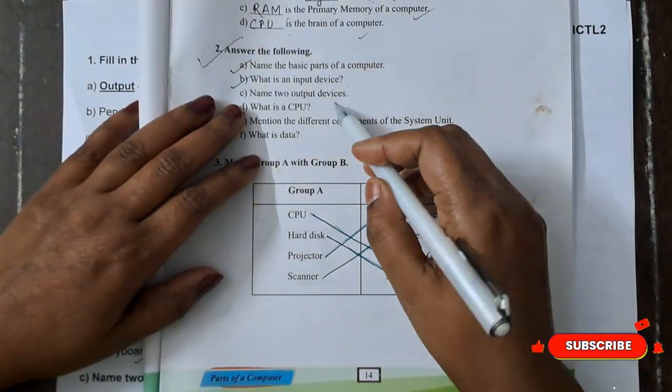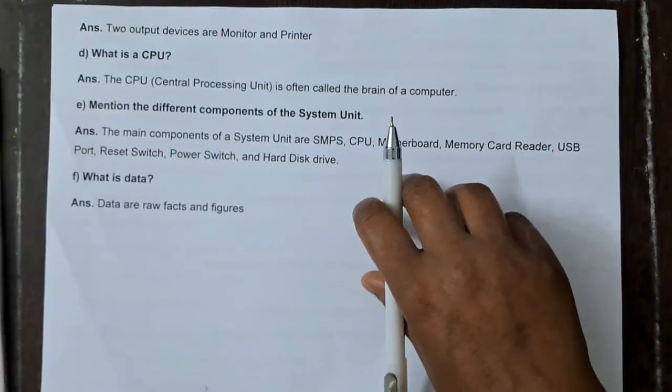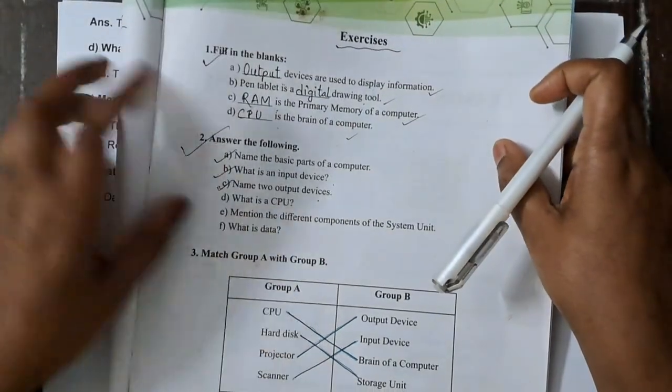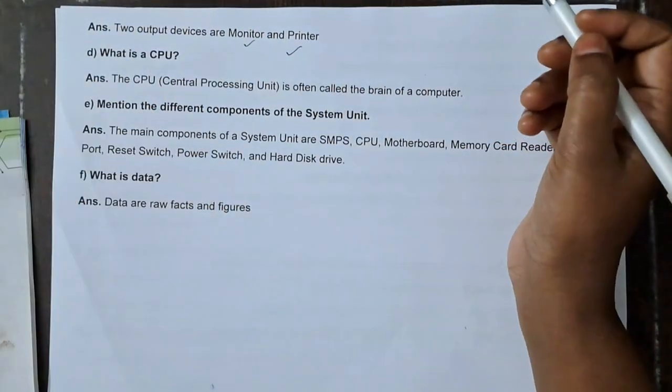Now, name two output devices. The two output devices are monitor and printer.